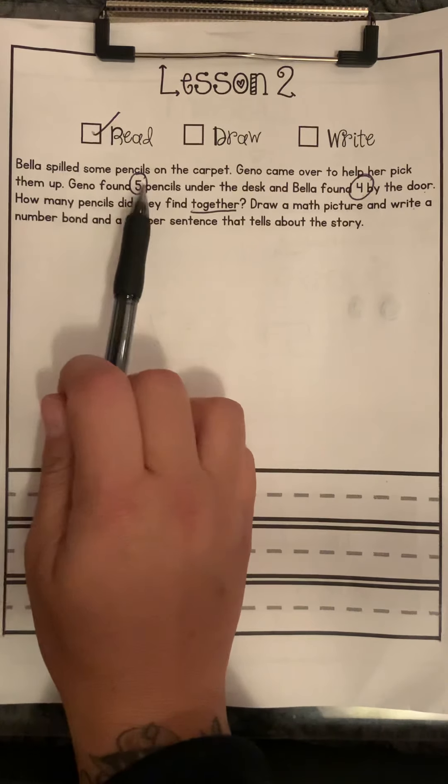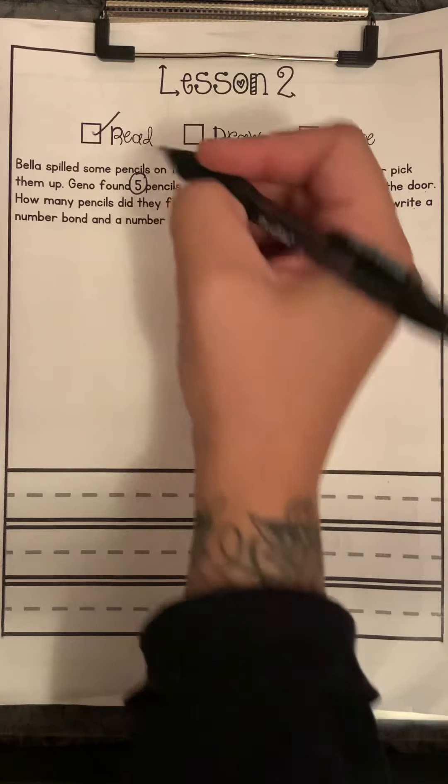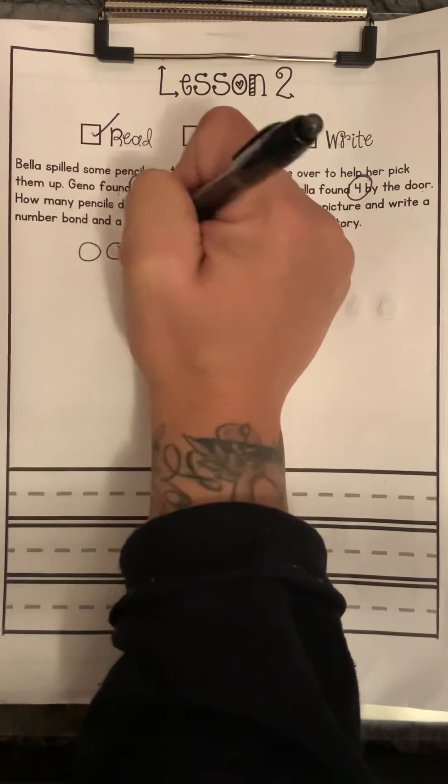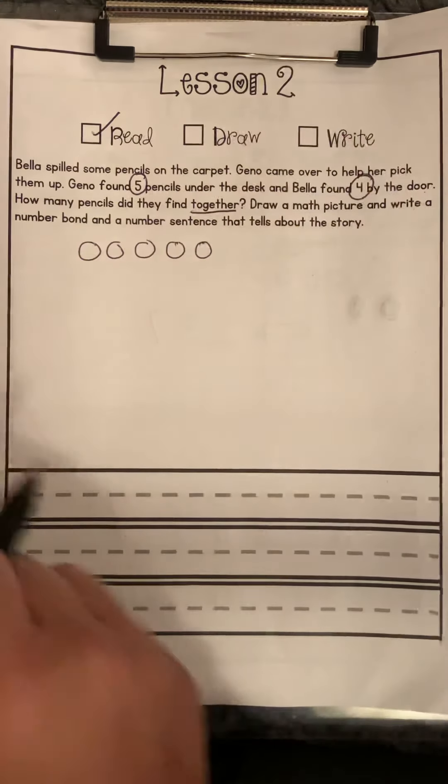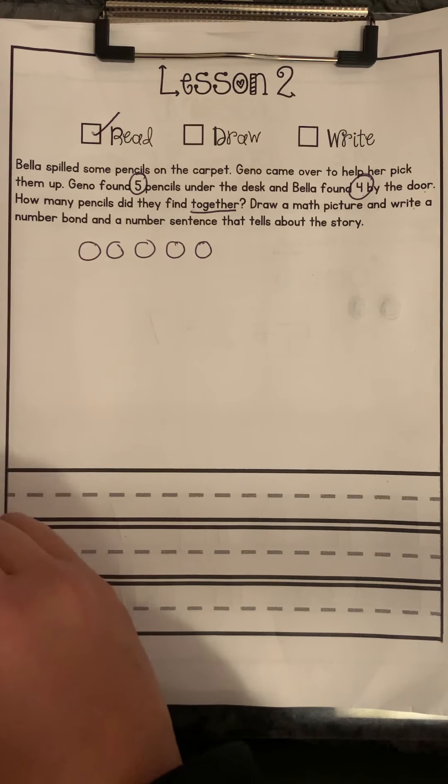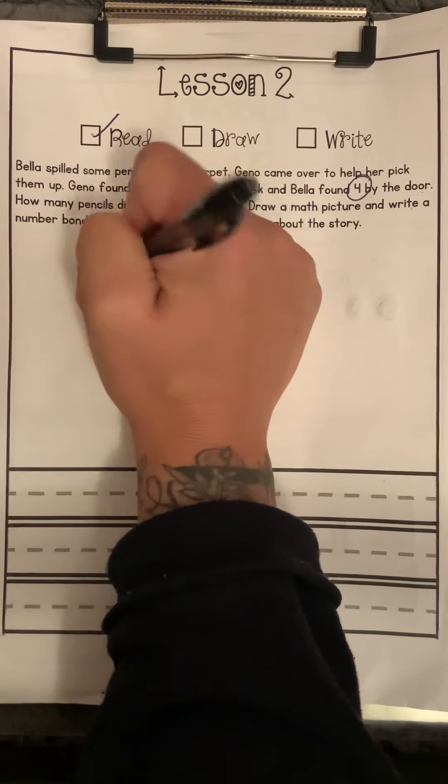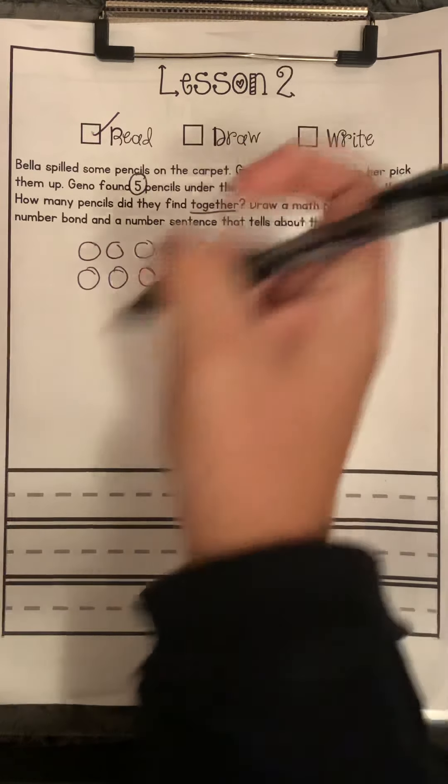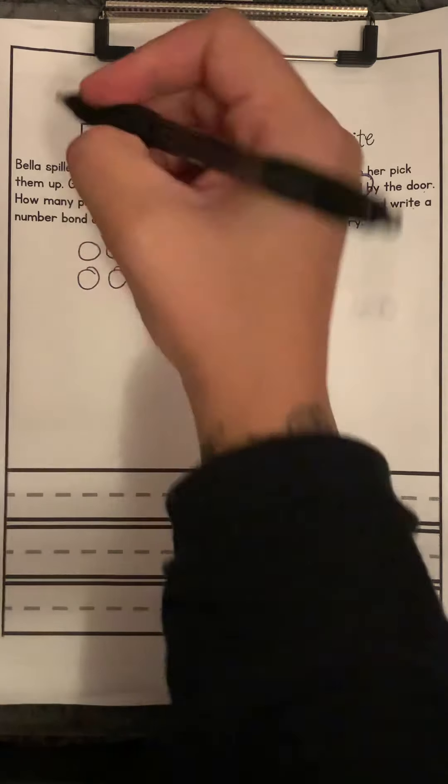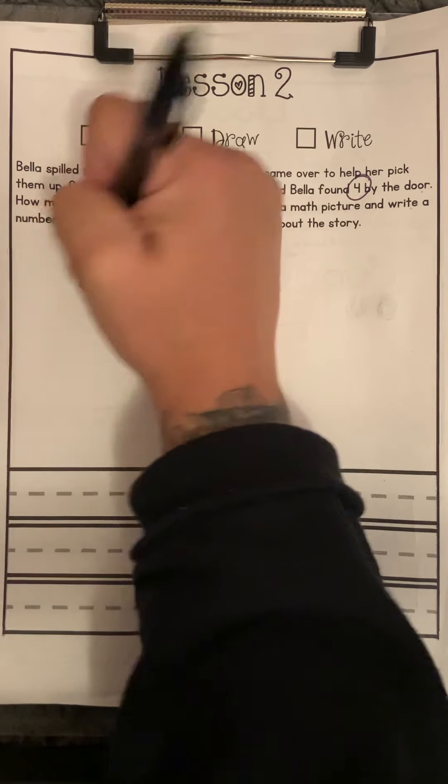So first, I'm going to draw Gino's five pencils. I like to draw circles because it's quick, easy, nice, and neat. So there are Gino's five pencils. Bella found four by the door. So I'm going to draw Bella's four pencils. But I like to color in the second row so that I can see what ones I've added in.